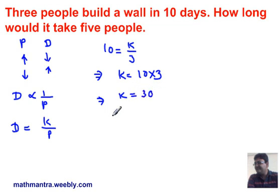Therefore, my equation now becomes D equals 30 over P. Now, in our question, we have to find out how many days it would take 5 people. So, the value of P here is given as 5.